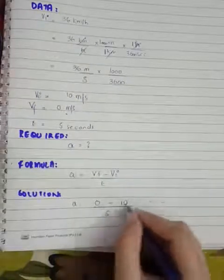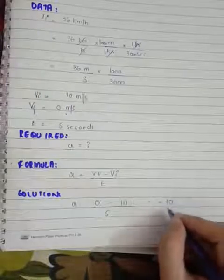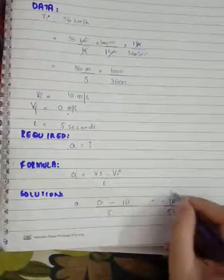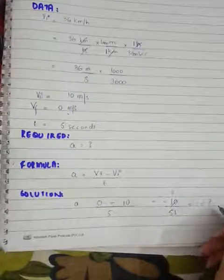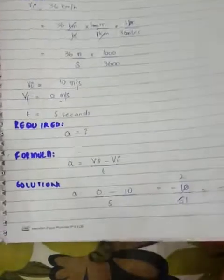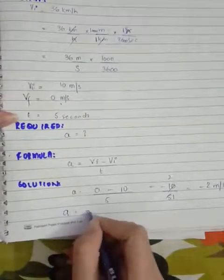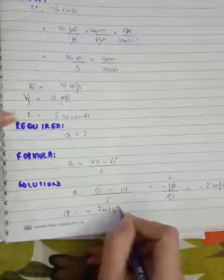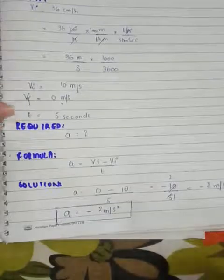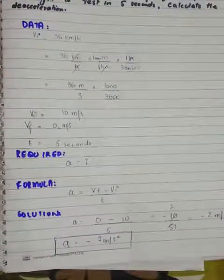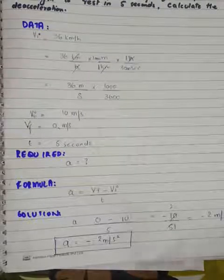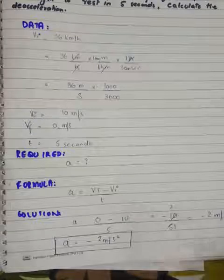So 0 minus 10 is minus 10, divided by 5 gives minus 2. The unit is meter per second squared. Therefore, acceleration is minus 2 meter per second squared. The minus sign shows that the car's velocity is being reduced — it is decelerating, so this is our deceleration.